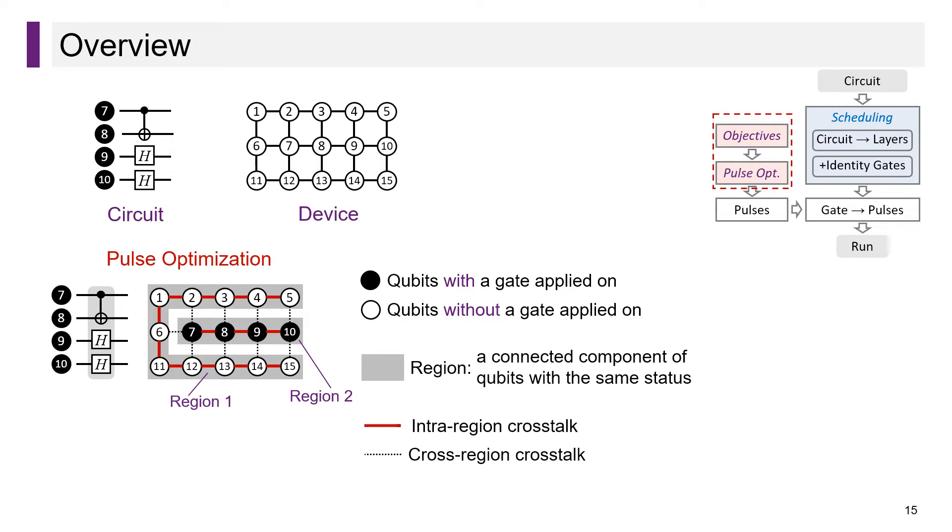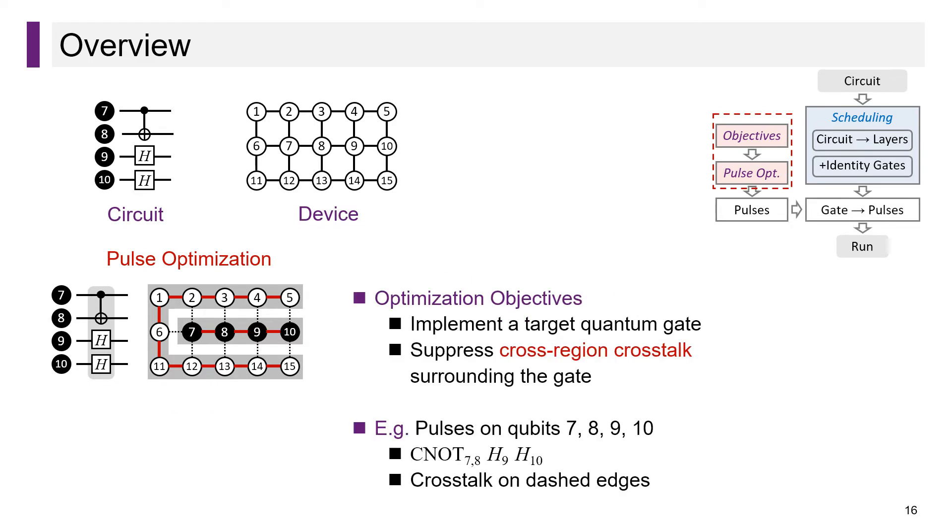The device now has two regions. From the perspective of regions, we can classify crosstalk into two types: intra-region and cross-region, which we represent with solid and dashed edges respectively. We optimize pulses not only to implement target quantum gates, but also to suppress cross-region crosstalk surrounding the gates. In this example, we optimize pulses to implement CNOT and two H gates and suppress crosstalk on all the dashed edges.